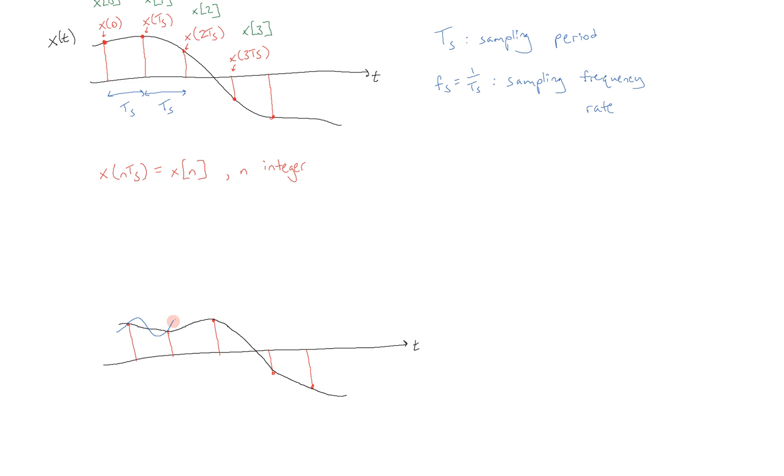For example, I could have had this as the original, which also goes to the same samples. The point is that if I choose my t sub s to be the specific value that I have chosen right here, then sampling both the black and the blue signal will give you the same exact sample sequence because at those points in time, the signal values are exactly the same.